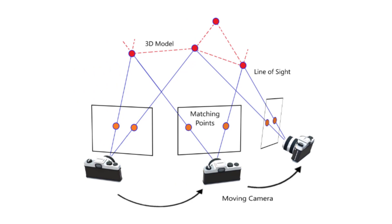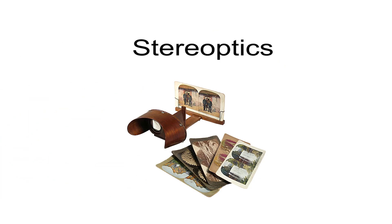If you look at this diagram, you can see that the matching points create a line of sight from the camera to the point in space. The differences between the lines of sight of the images is what the 3D information is derived from. This is known as parallax. As I mentioned in the beginning of this video, photogrammetry uses stereo optics.